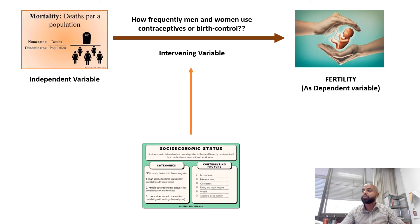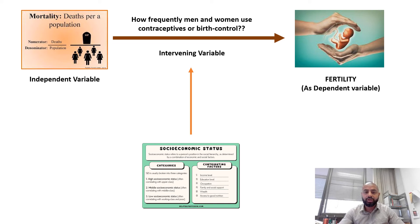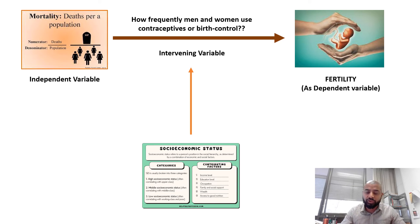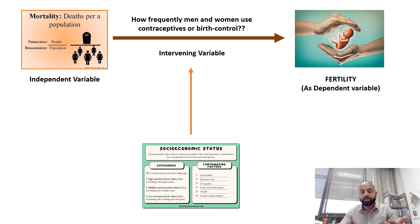Similarly, socioeconomic status is another extraneous variable. People from a low socioeconomic status may tend to have more children — perhaps wanting to use them as laborers and family earners — whereas people of higher socioeconomic status may choose fewer children. Or vice versa: people of higher socioeconomic status may choose more children because they can afford them, and people of low socioeconomic status fewer children because they cannot afford to maintain them. So is socioeconomic status playing a role instead of — or alongside — contraceptive use?